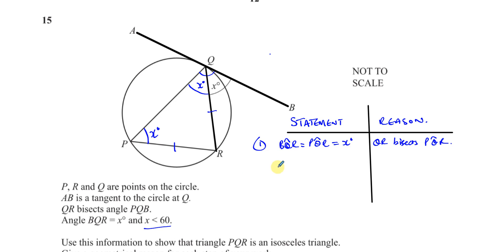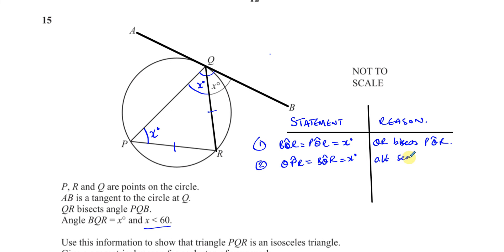The second statement we can make is that angle QPR is equal to angle BQR — they're both equal to X. The reason: we can just mention the alternate segment theorem. Even if you write it in shorthand form, that should be fine. That shows that this angle and this angle are the same.